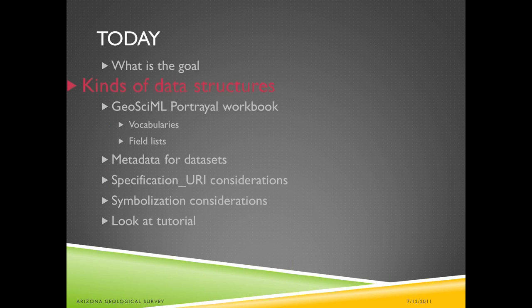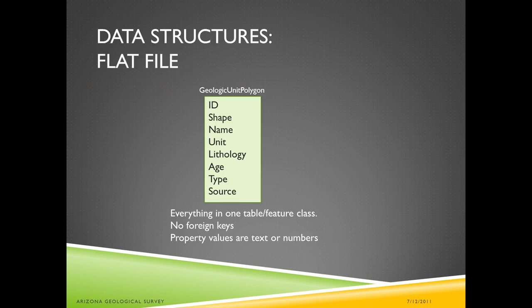Today I wanted to dive into some background issues. Just a quick review of how geologic map databases are set up. The simplest setup is a flat file format, where for geologic units you have one polygon file. There's an identifier for each polygon, a shape geometry field, and then something like the name of the unit and maybe some other description. Maybe some lithology terms to categorize the unit, something about the age of the unit, what kind of unit it is, maybe some source information. The basic idea is they're all in one file.